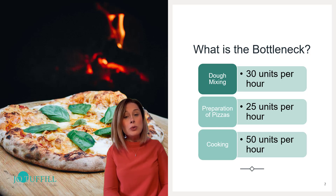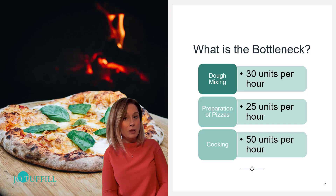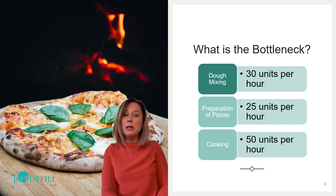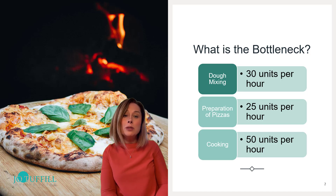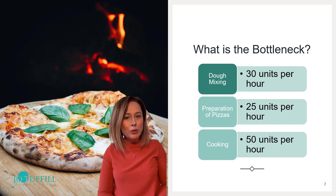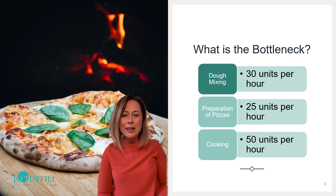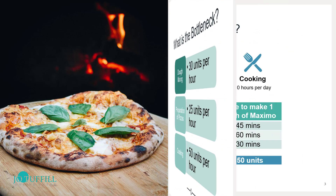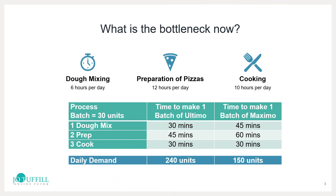If there was equal time in the factory for all three processes, then the bottleneck would be the preparation of pizzas, because that's the one that processes the lowest number of units per hour. However, it's not as simple as that in exam questions, because often the time available on each of the processes is different. Let's have a look at that now in a proper example — my pizza factory.